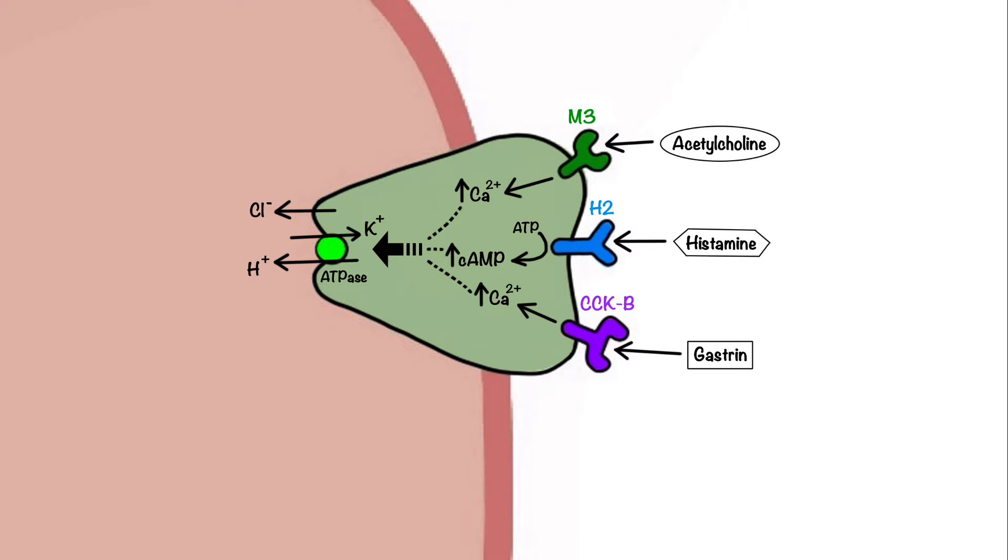In the stomach lumen, hydrogen, chloride, and water combine to form hydrochloric acid, which creates a highly acidic environment for digestion.